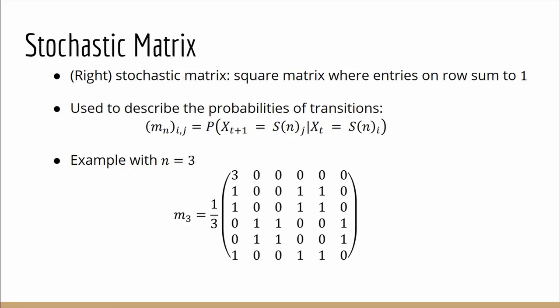With that we can obtain our stochastic matrix or more specifically a right stochastic matrix where the entries on each row sum to 1. It's used to describe the probabilities of transitions as shown formally here as well and here is the stochastic matrix where n equals 3.